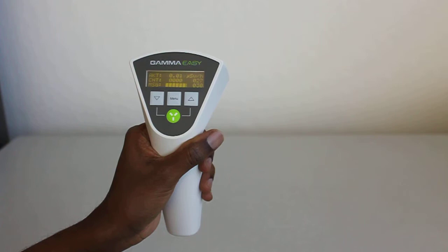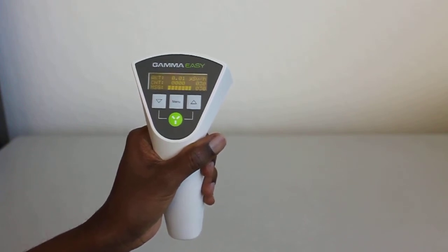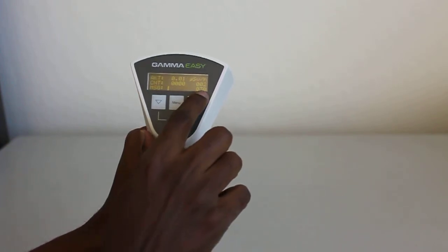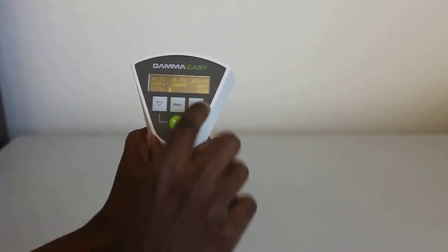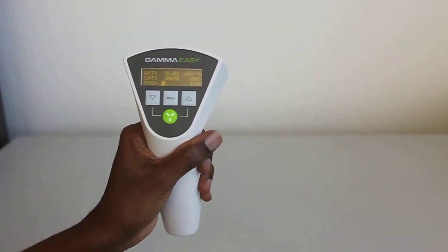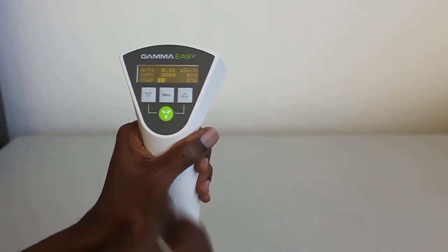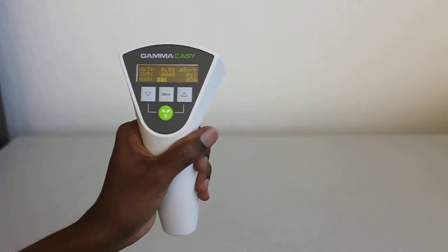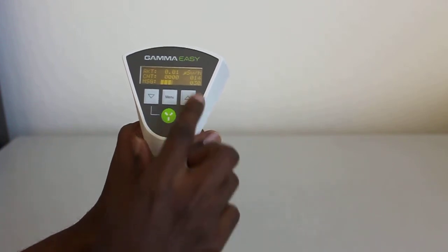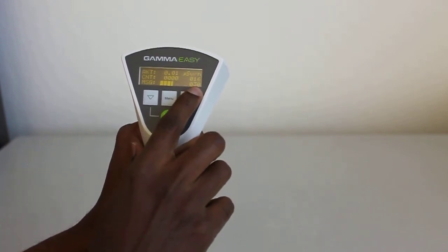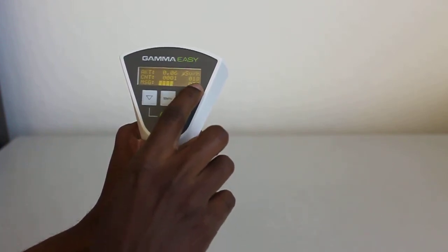That's the count of events in the GM tube, the Geiger-Müller tube, which is a sensor within the period of 30 seconds. That's the last line that will tell you what the measurement time is for your counts.